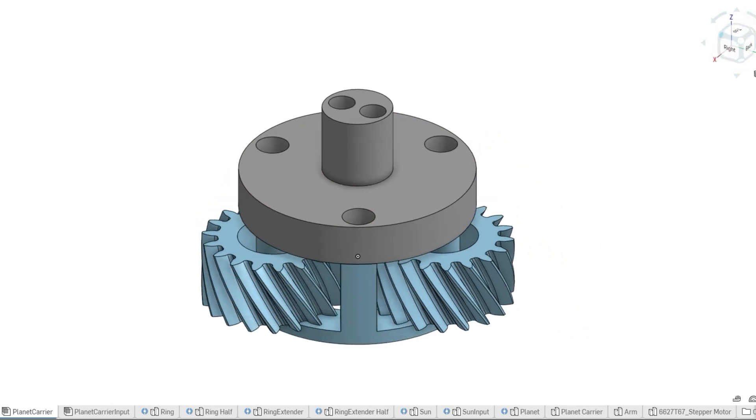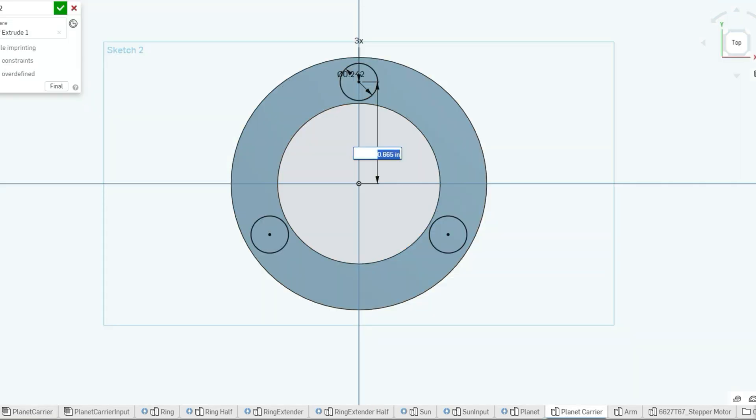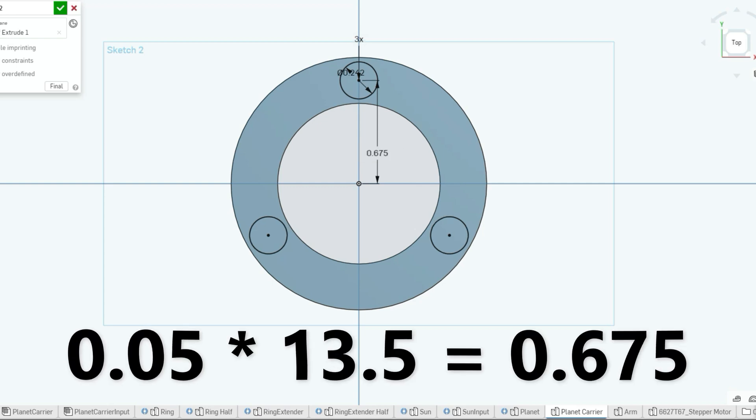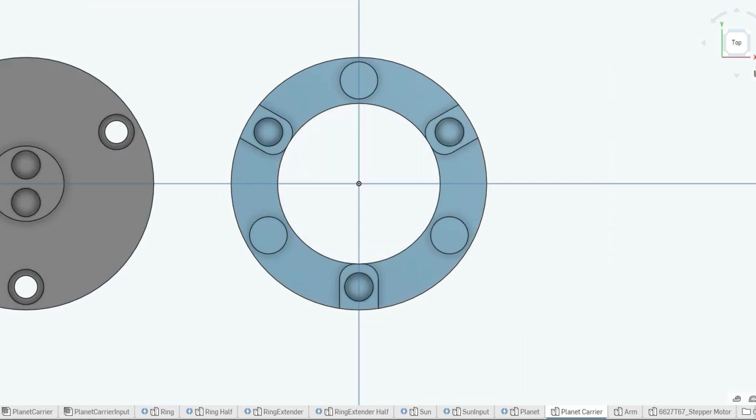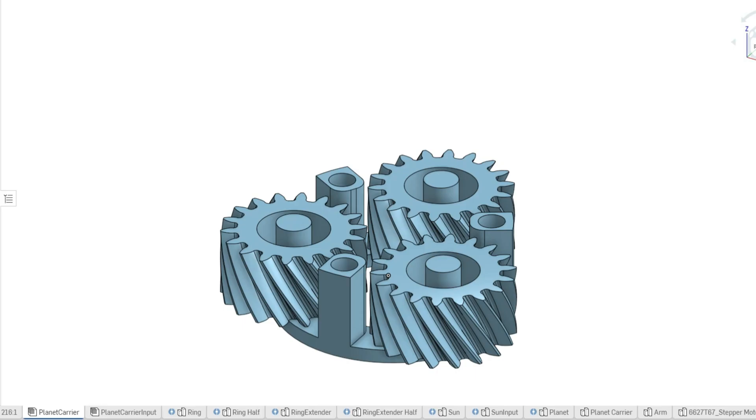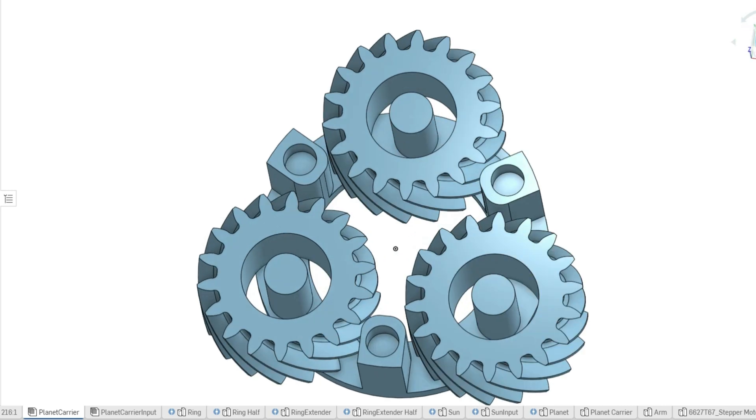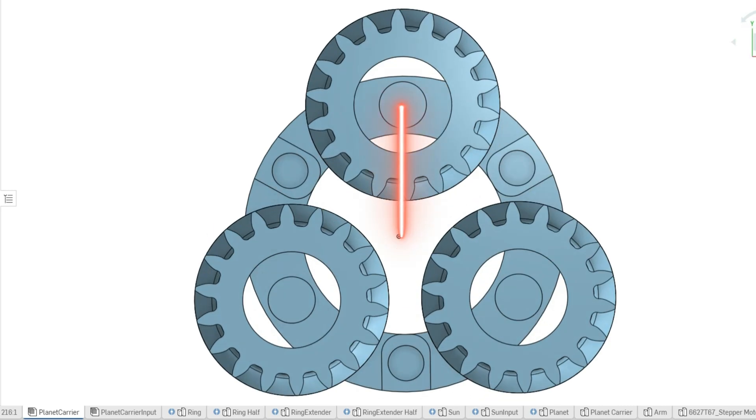When making the planet carrier, that's when we used the last two measurements that the generator gave us. The distance between the planets is our module which is 0.05 times 13.5 which gives us 0.675. So when making the rod the planets are going to sit on, the distance from the center of the circle compared to the center of the carrier has to be 0.675.